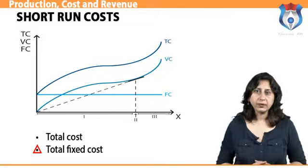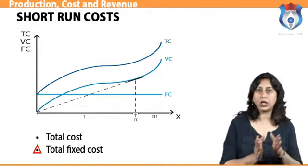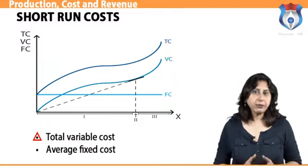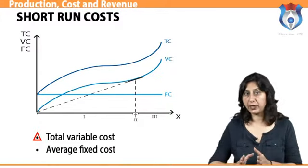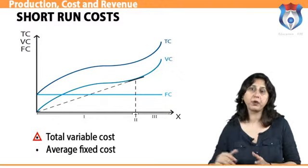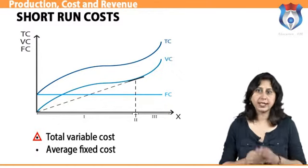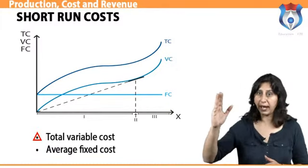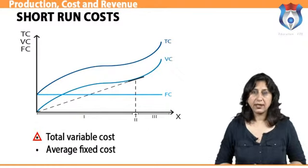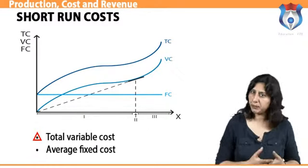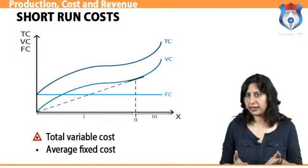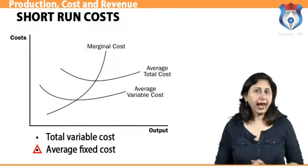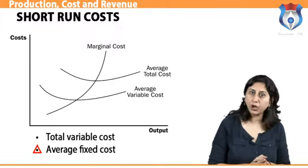Fixed cost is incurred whether or not any output is produced. Variable costs are corporate expenses that vary in direct proportion to the quantity of output. Variable costs are a direct function of production volume, rising whenever production expands and falling whenever it contracts. Examples of common variable costs include raw materials, packaging, and labor directly involved in a company's manufacturing process.